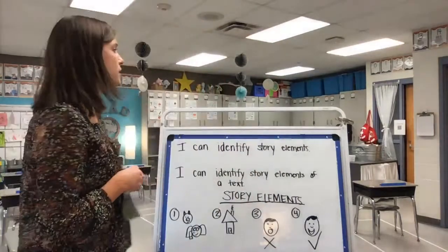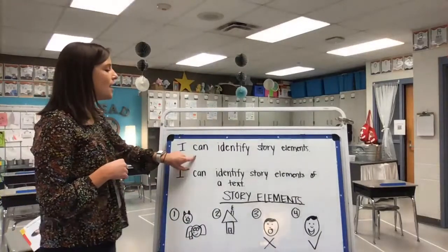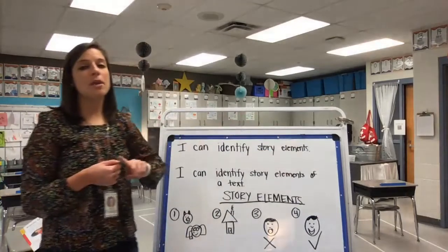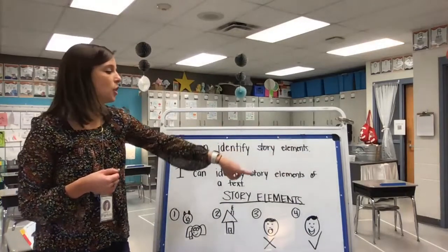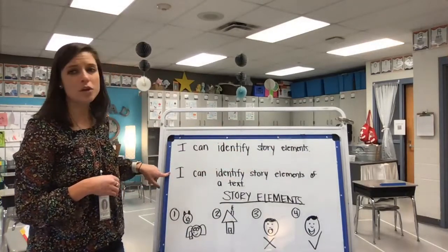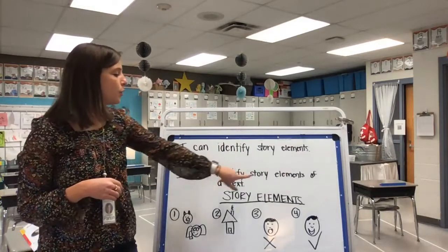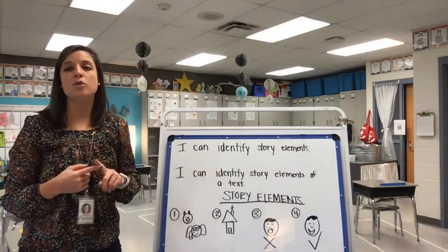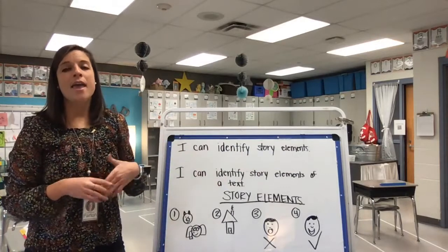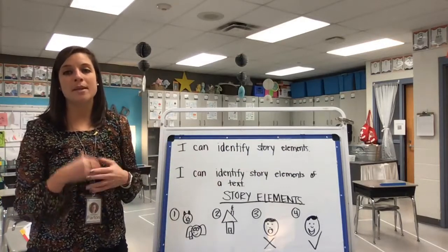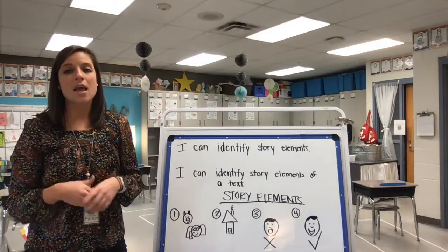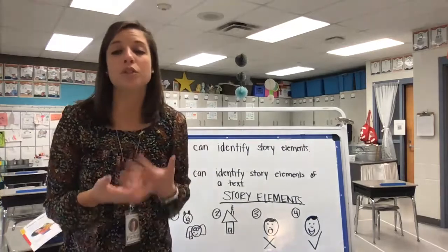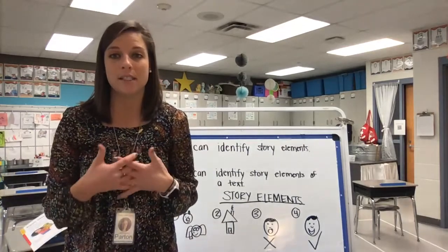We have two learning targets. Our first learning target says: I can identify story elements — so we're going to be able to name what our story elements are. Our second learning target says: I can identify story elements of a text. We're going to look at a new poster that has words today and identify the four story elements in that text. Story elements are so important to a story in order for it to be interesting and make sense to us.